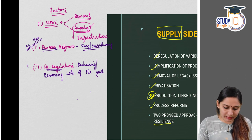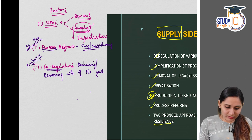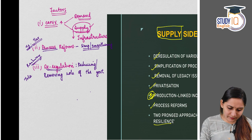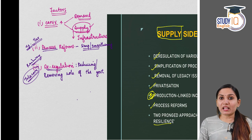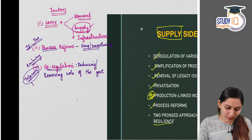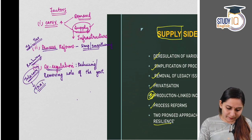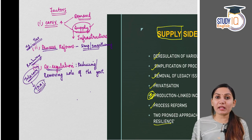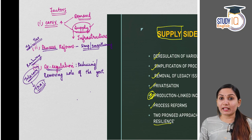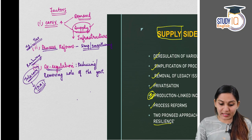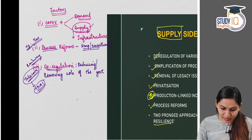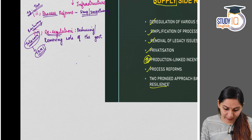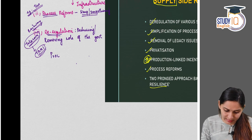For deregulation, let us take the example of the telecom sector. The telecom sector is now privatized but there is government regulation over it in the form of TRAI — the Telecom Regulatory Authority of India. Deregulating means reducing or removing the role of the government in that sector. That is the difference between process reforms and deregulation. You need to clearly understand the difference between both.